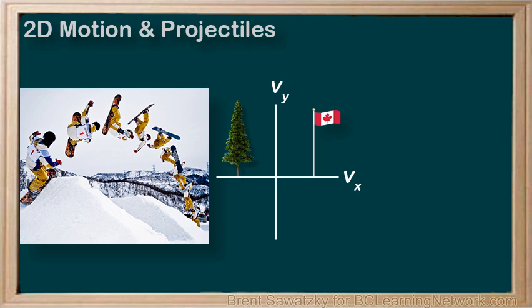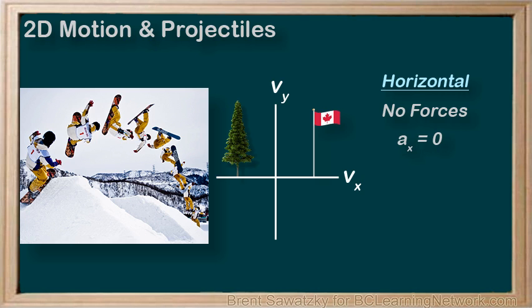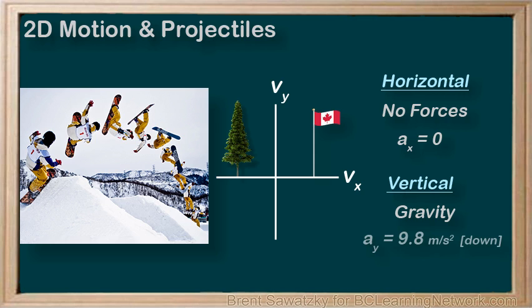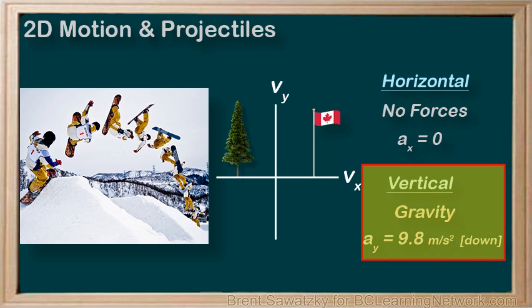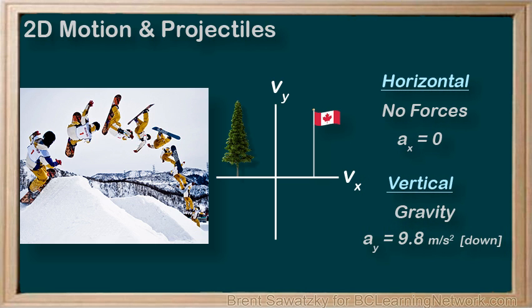Horizontal and vertical are not arbitrary choices for dimensions here. In fact, splitting the motion of a projectile this way is really strategic. In the horizontal direction, we have no forces on the projectile, and therefore no acceleration. While in the vertical direction, we have gravity, and therefore we always have an acceleration of 9.8 meters per second squared downward. Thus, we can take any projectile problem and brilliantly split it into two parts — the horizontal motion and the vertical motion — and this makes these complicated motion problems very manageable.